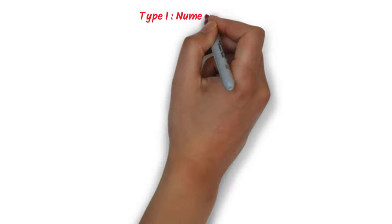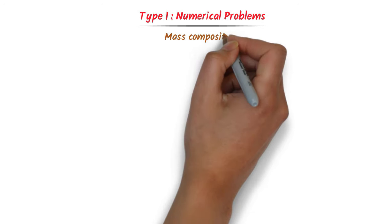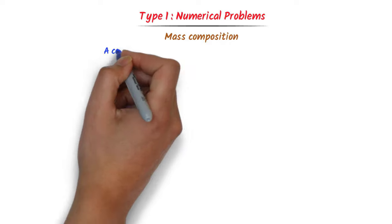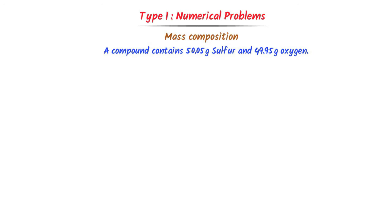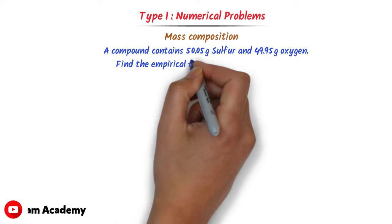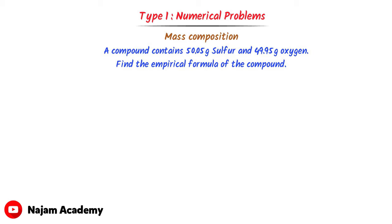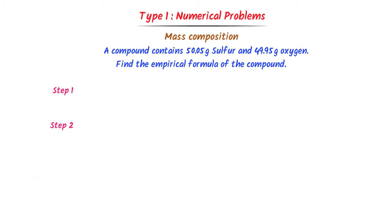Now let me teach you Type 1 numerical problems, which we call mass composition. Consider this problem: a compound contains 50.05 grams of sulfur and 49.95 grams of oxygen. Find the empirical formula of this compound. In such problems, we are given the masses of different atoms and asked to find the empirical formula. I solve these using three steps.